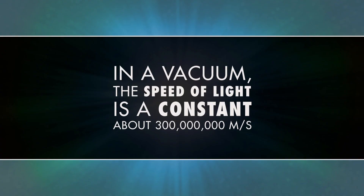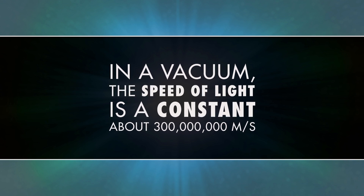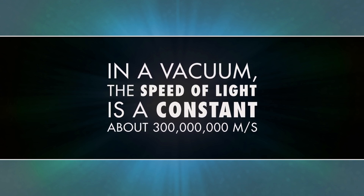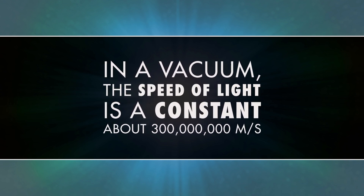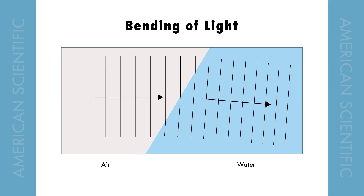First it's important to know that light is a form of energy and has a wavelength and velocity. In a vacuum the speed of light is a constant — about 300 million meters per second. But when light enters a transparent medium like water or glass the velocity of the light beam will slow down based on the medium's density, and in order to maintain the wave integrity the light must bend.